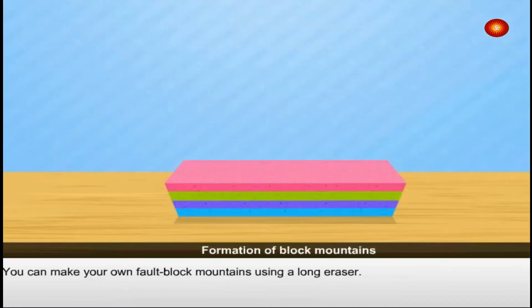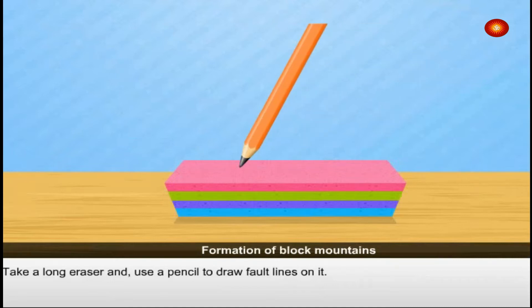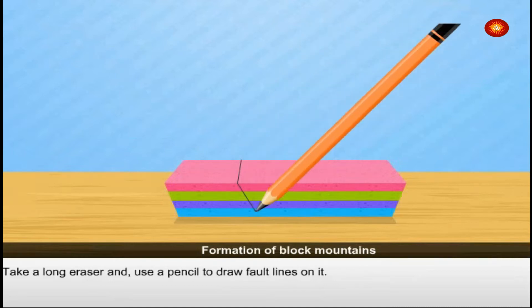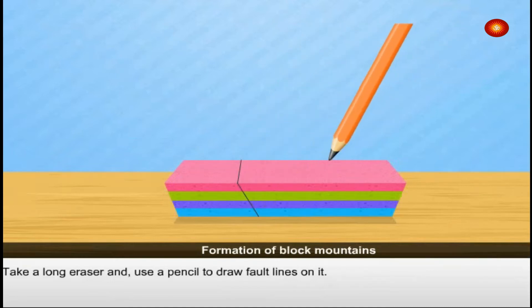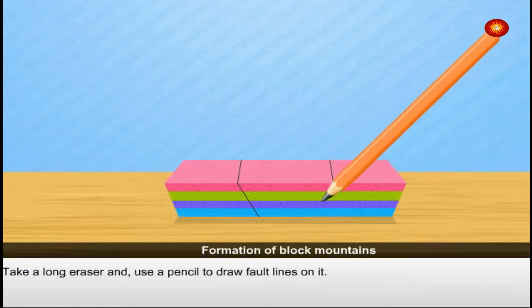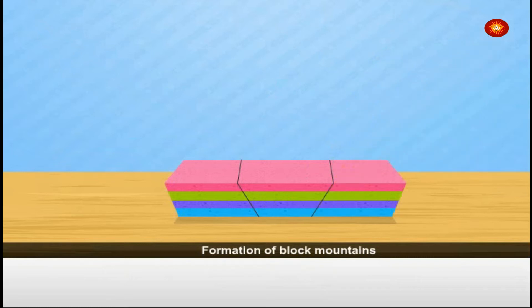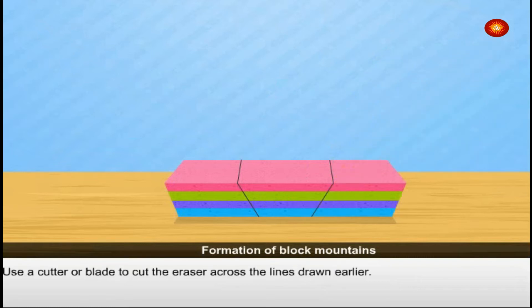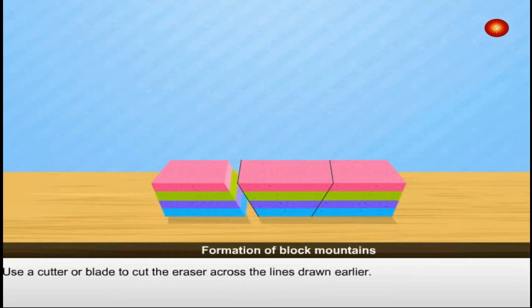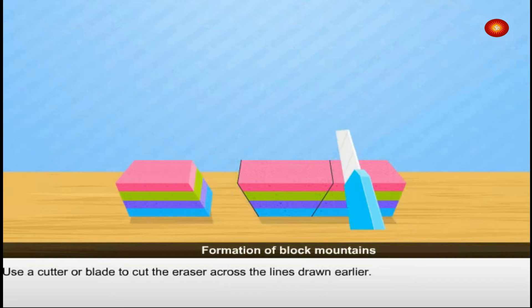You can make your own fault block mountains using a long eraser. Take a long eraser and use a pencil to draw fault lines on it. Use a cutter or blade to cut the eraser across the lines drawn earlier.